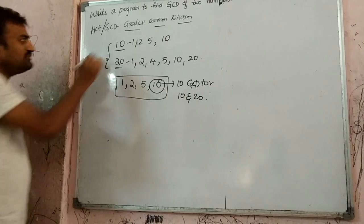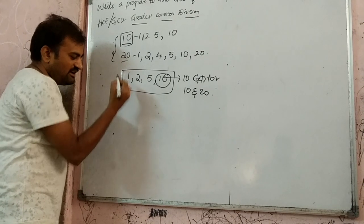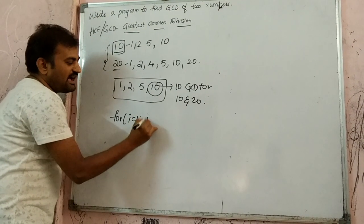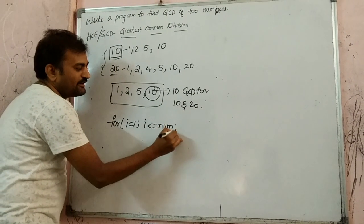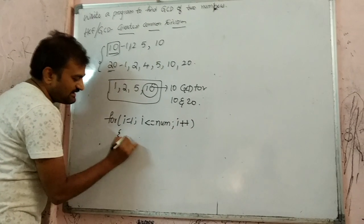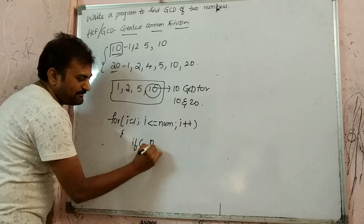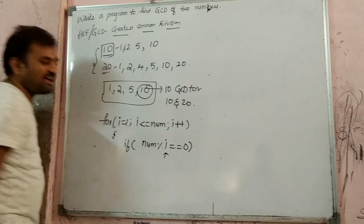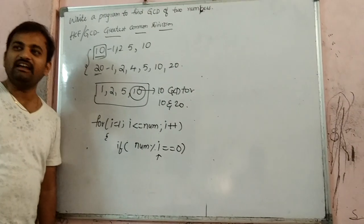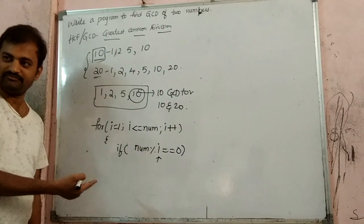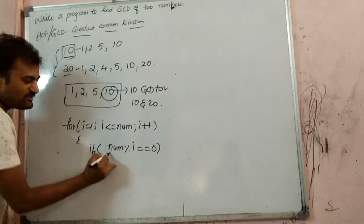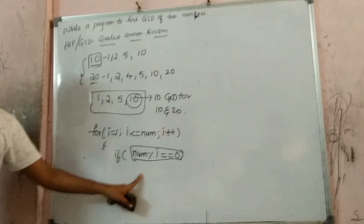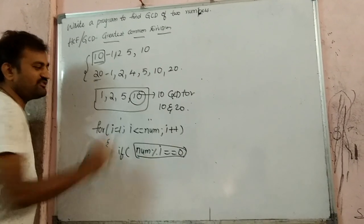So for example, just for 10, what is the code for finding the factors of 10? We use a for loop saying: for i equal to 1, i less than or equal to num, i++. If num modulo i equals 0, then we say i is a factor. This is finding the factors of a number, which we write in a for loop. So as i starts from 1 to 10, we have to write like this.